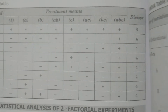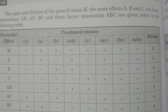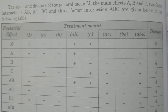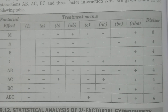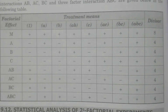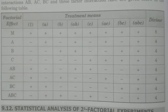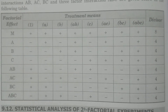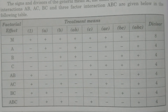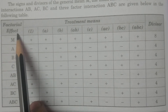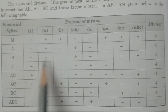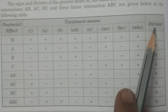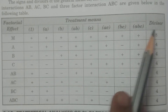Now, directly coming to the signs — what are the signs? The signs are going to be represented here for each and every particular treatment mean. So for all treatment means, what are the signs in the respective factorial effects? Here are the signs and divisors, represented in a table for factorial effects, treatment means, and divisors — the signs of the treatment means and what is the divisor of that formula.